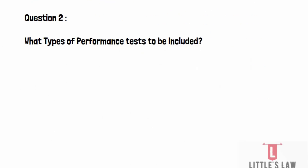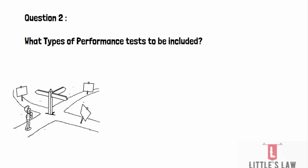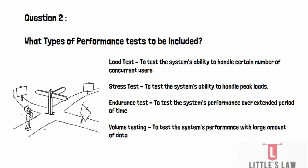The second question is: what types of performance tests should be included in the performance testing plan? The types depend on the system under test and the objectives of testing. Common types include load testing — to test the system's ability to handle a certain number of concurrent users — stress testing — to handle peak loads — endurance testing — to test performance over an extended period — and volume testing — to test performance with a large amount of data.